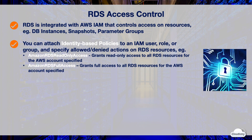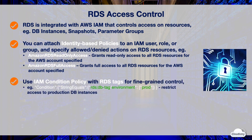For example, AmazonRDS read-only access is an AWS-managed policy that grants read-only access to all RDS resources for the AWS account specified. AmazonRDS full access grants full access to all RDS resources for the AWS account specified. In addition, you can use IAM condition policy with RDS tags for fine-grained access control.